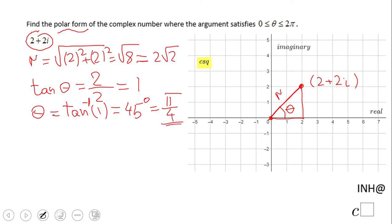So now this complex number in the complex plane will be 2 square root of 2 times (cosine pi over 4 plus i sine pi over 4).